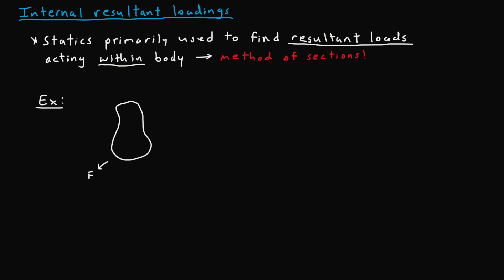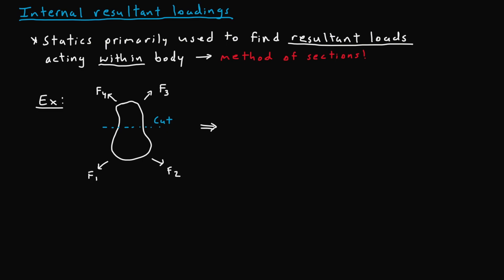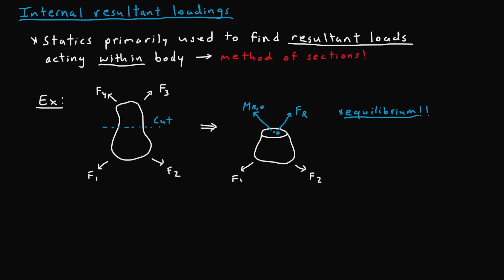Taking an example to visualize this: say we have a random body with applied forces. If we want to find the internal resultant loadings created by these forces, we can create a cut at the center of the body. Following the method of sections, our lower part of the body will have forces F1 and F2 after the cut. On the cross section, we expect internal loadings which could be a moment or a normal force resulting from these external loads. Using our knowledge of statics, we apply equilibrium to find the value of the resultant loads.